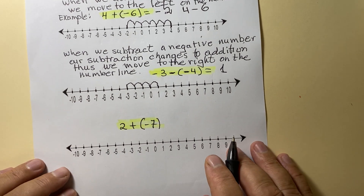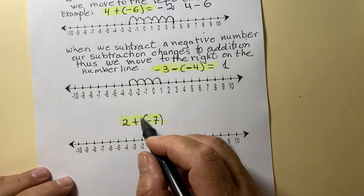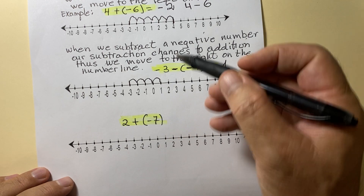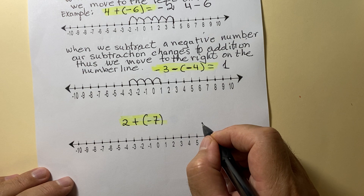Here is another example: 2 plus negative 7. We already did that — this is your turn. Thank you for watching the video.